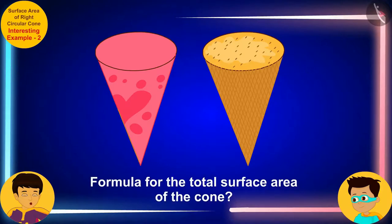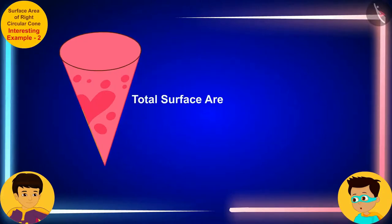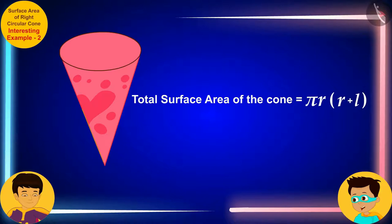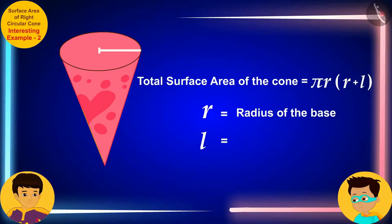Do you remember the formula for the total surface area of the cone, Thomas? The total surface area of the cone is equal to the product of π, r, and the sum of r and l, where r and l are the radius of the base of the cone and its slant height respectively.